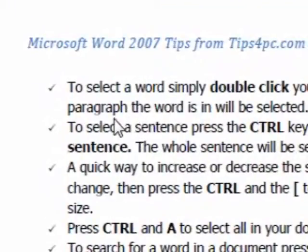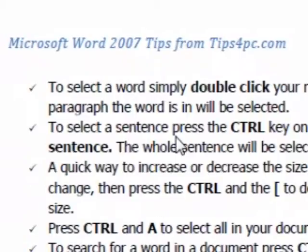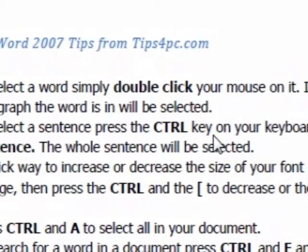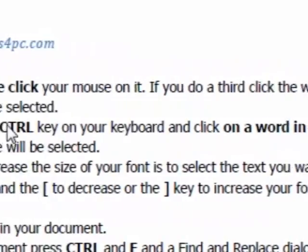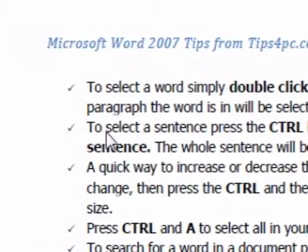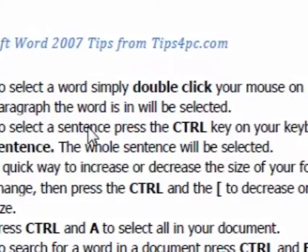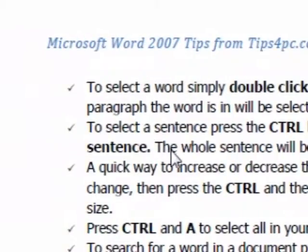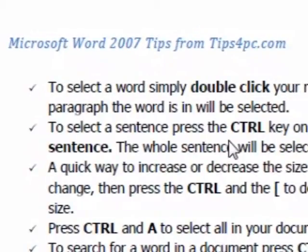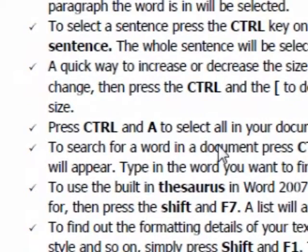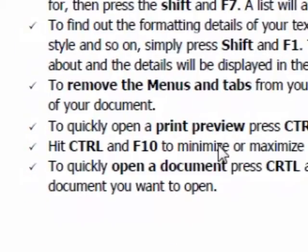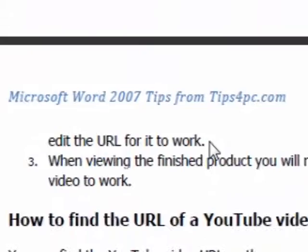There's stuff like this — using Ctrl+click to select a sentence. Press the Ctrl key on your keyboard and click on a word in the sentence, and it will select the whole sentence. These are just little tricks that you can try out yourself — I've tested them all so they all work. They're really great; some of them you'll find something that you can't live without.